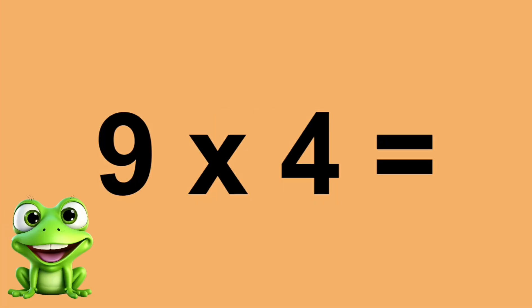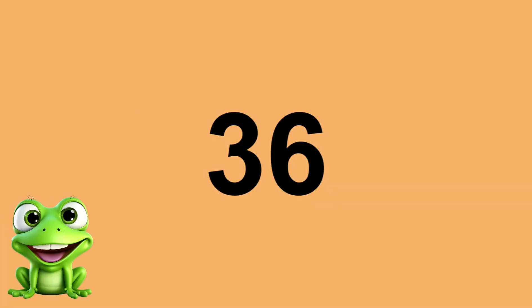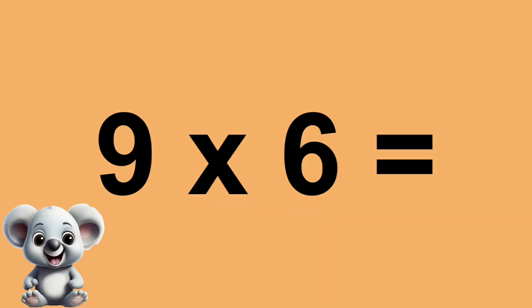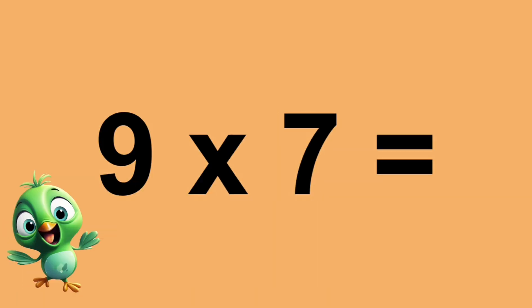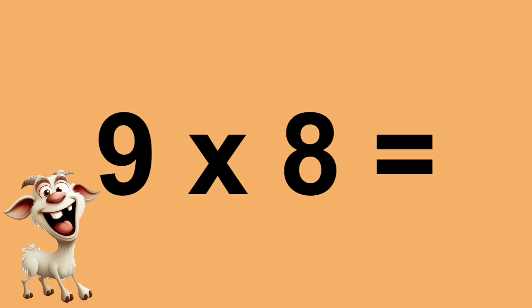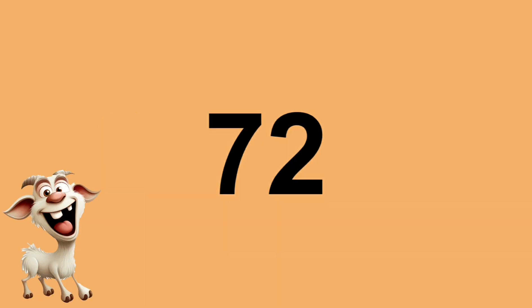Nine times four equals thirty-six. Nine times five equals forty-five. Nine times six equals fifty-four. Nine times seven equals sixty-three. Nine times eight equals seventy-two.